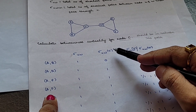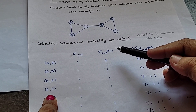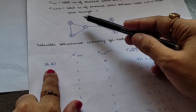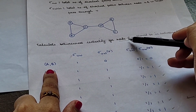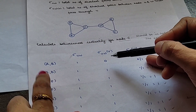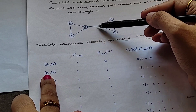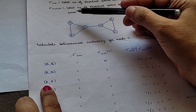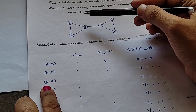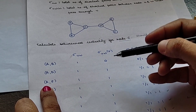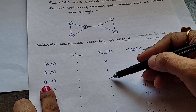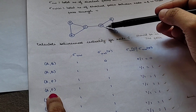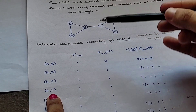Next is sigma(U,V,V), the total number of shortest paths between U and V passing through node C. For A to B, node C is not in the path, so it is 0. For A to D, C lies in between, so this is 1. For A to E, you traverse A-C-D-E, passing through node C, so this is 1. For A to F, the shortest path is A-C-D-F, with C in between, so this is 1.